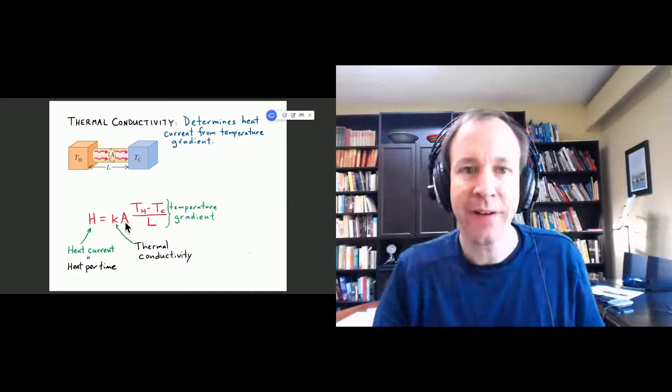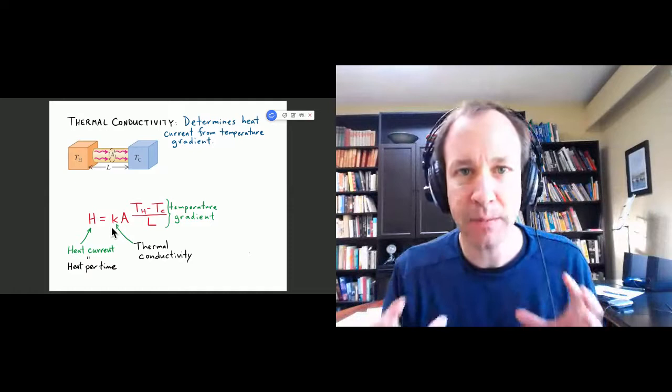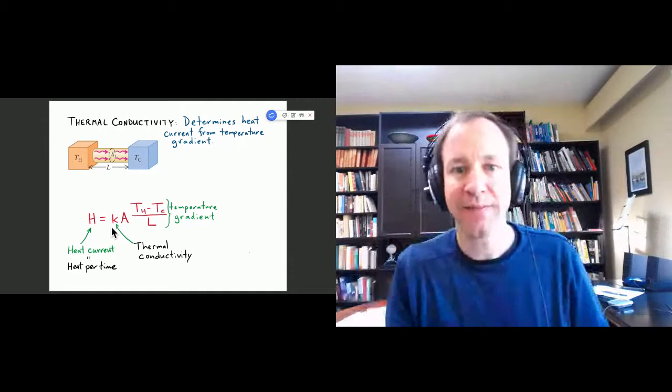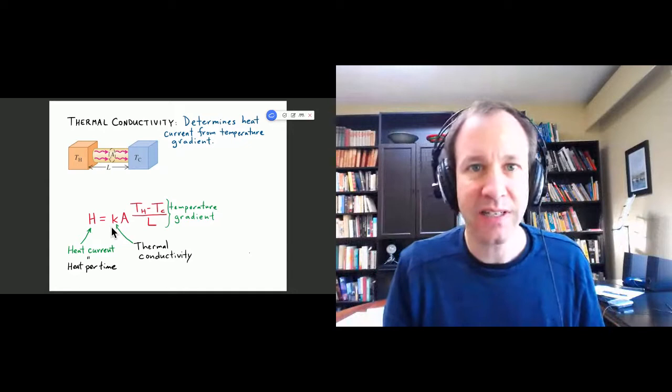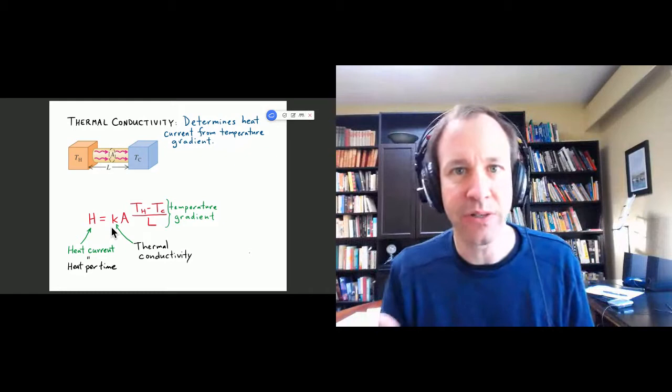Finally, we have a proportionality constant — the thermal conductivity — which is a basic property of the material. This is a different property from alpha and from specific heat. You can measure it or look it up in a table for materials like aluminum, styrofoam, or steel.